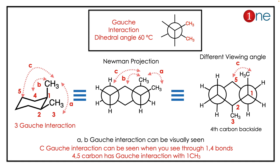Interactions a and b are easy to understand because the methyl groups are nearby — very straightforward. But viewing interaction c is harder. You have to imagine the gauche interaction between carbon 5 and carbon 1. So in total, you have three gauche interactions: a, b, and c. For c, you need proper spatial imagination.